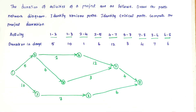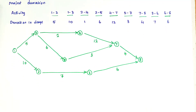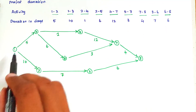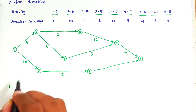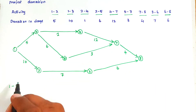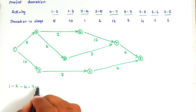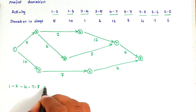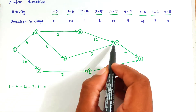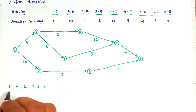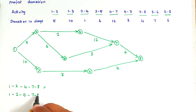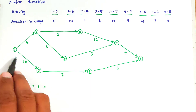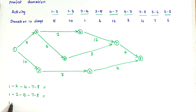So we have to identify the different paths from the network diagram. The first path is 1-2-4-7-8. The second path is 1-2-5-7-8. The third path is 1-3-6-8. So these are the different paths.